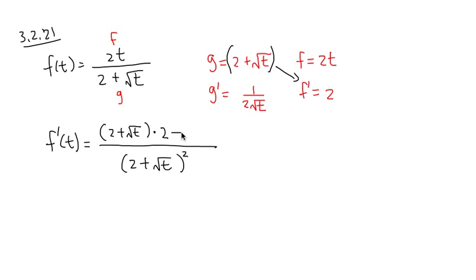And for quotient rule, you subtract this, which is 2t, times, and you pair it with this, 2t times 1 over 2 square root of t, like that. So that's it for the calculus part. Then the rest is algebra.